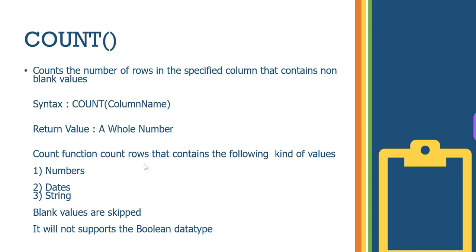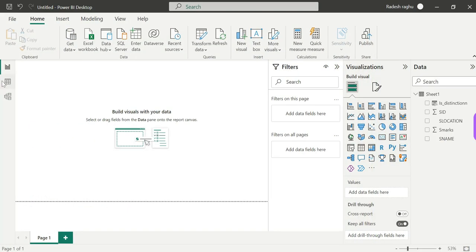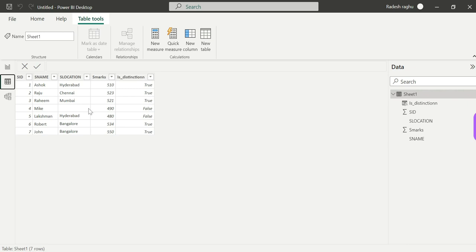The COUNT function counts the following kinds of values: numbers, dates, and strings. Blank values are skipped. It will not support the Boolean data type — Boolean meaning true or false. So a Boolean data type column will not be supported by COUNT.